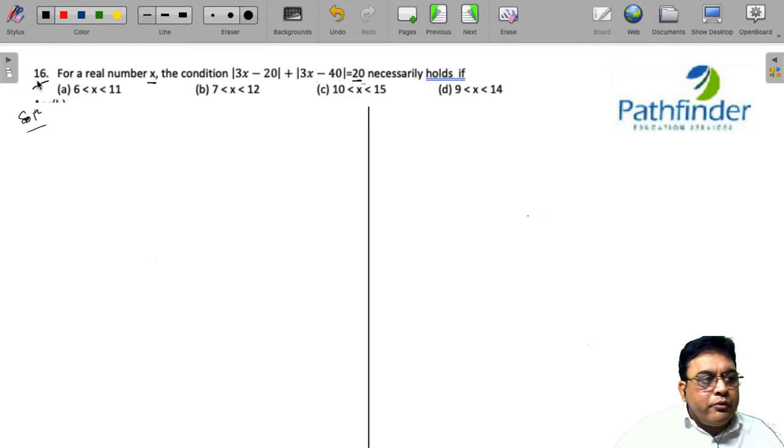CAT 2021 slot 2, question number 16. For a real number x, the condition |3x - 20| + |3x - 40| = 20 holds if. There are four options given.